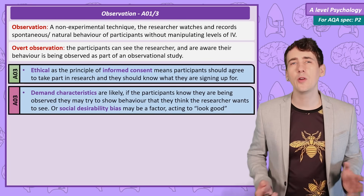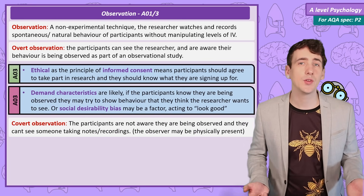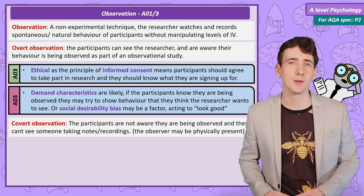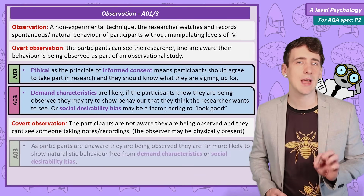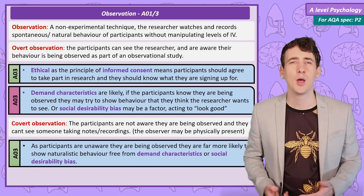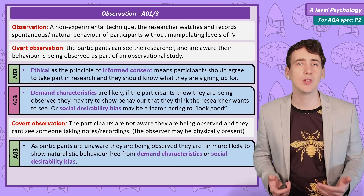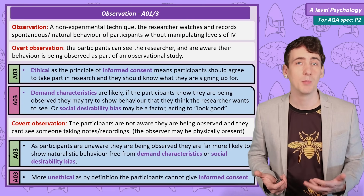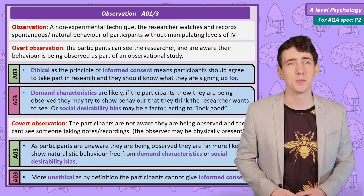A covert observation solves that problem. The participant doesn't know they are being observed, so the researcher is now observing natural behaviour, giving their research more validity. But the weakness is the researcher can now be argued to be unethical because the participant hasn't given their informed consent.